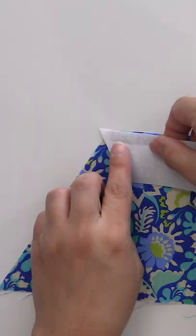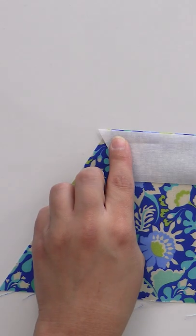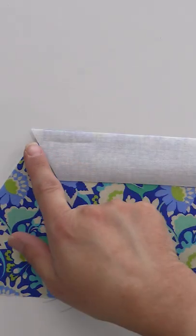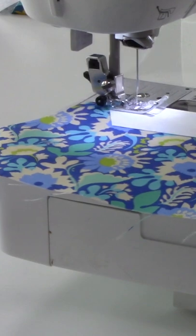So we're gonna flip these guys right sides together, have it extend about a quarter inch beyond. When you put this underneath your machine to sew, you're gonna be able to start sewing right where that little valley is.